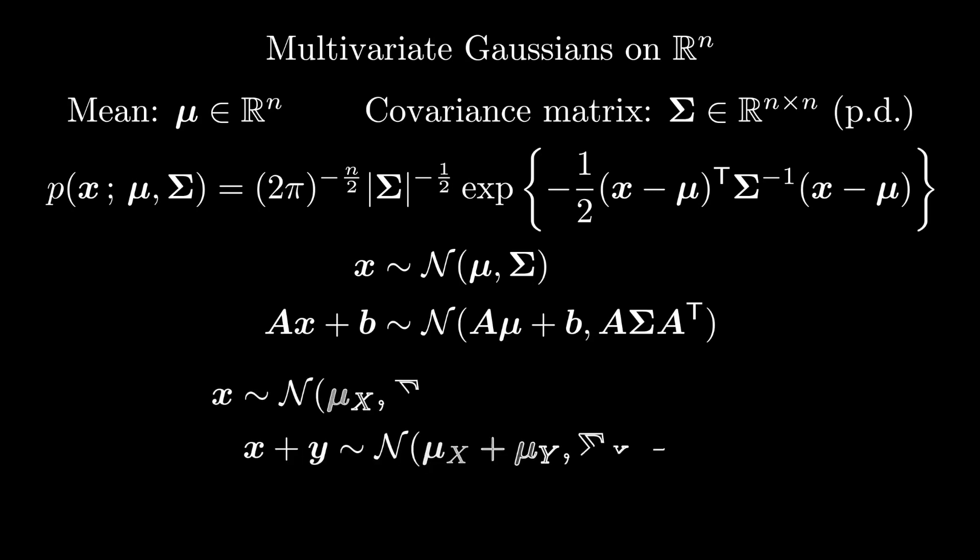As in the univariate case, sums and differences of multivariate Gaussian vectors are also Gaussian. The mean of the sum is the sum of the means, and the mean of the difference is the difference of the means. In both cases, the covariance is the sum of the previous covariances.